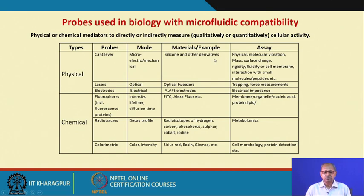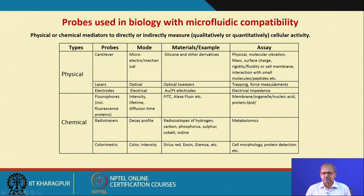The materials used for cantilever-based probes are silicon and other derivatives; for optical, we use optical tweezers; and for electrical, we use gold and platinum electrodes. The systems measured include molecular vibration, mass, surface charge, and rigidity for cantilever-based probes; trapping force measurement for lasers; and electrical impedance specifically for electrodes.